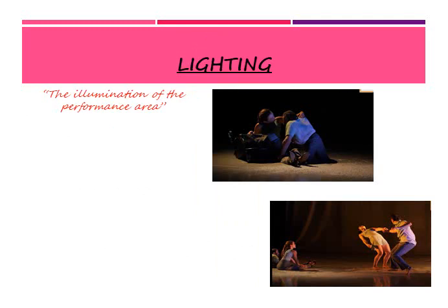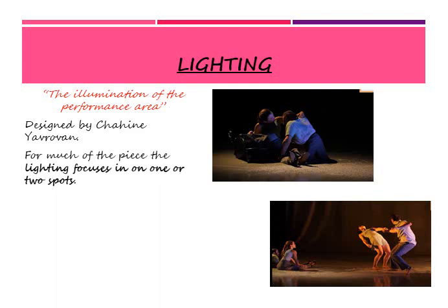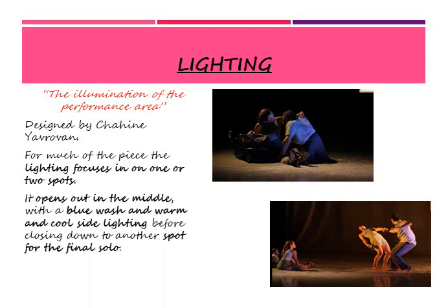Next we're going to look at the lighting. The definition of lighting is the illumination of the performed area. For much of the piece, the lighting focuses on one or two spots of the stage — it doesn't use the whole stage lit up. It opens out in the middle with a blue wash and warm-cool lighting before closing down to another spot for the final solo. If you think back to the dances we've done, we have looked at a dance with very similar lighting — in 'Ivy' we only used spotlights and we used blue colours.